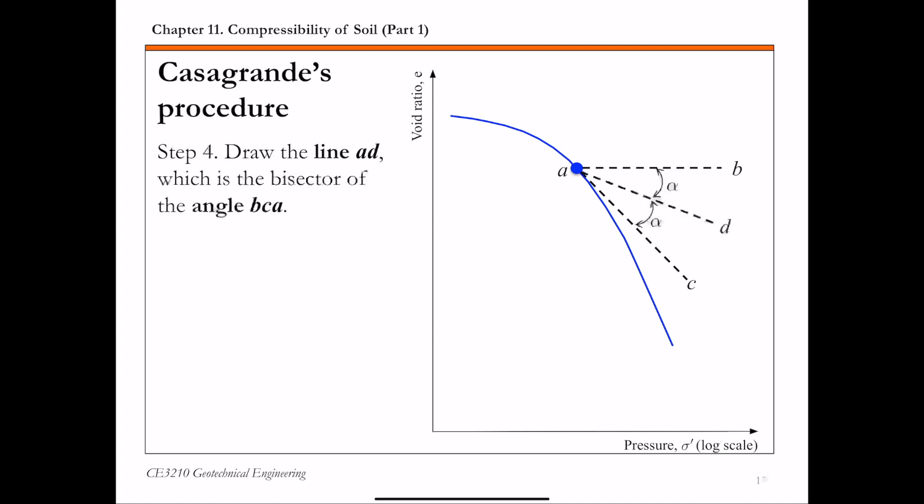Step 4 is to draw the line AD. This line AD bisects the angle BCA, so you have this equal angle from here.